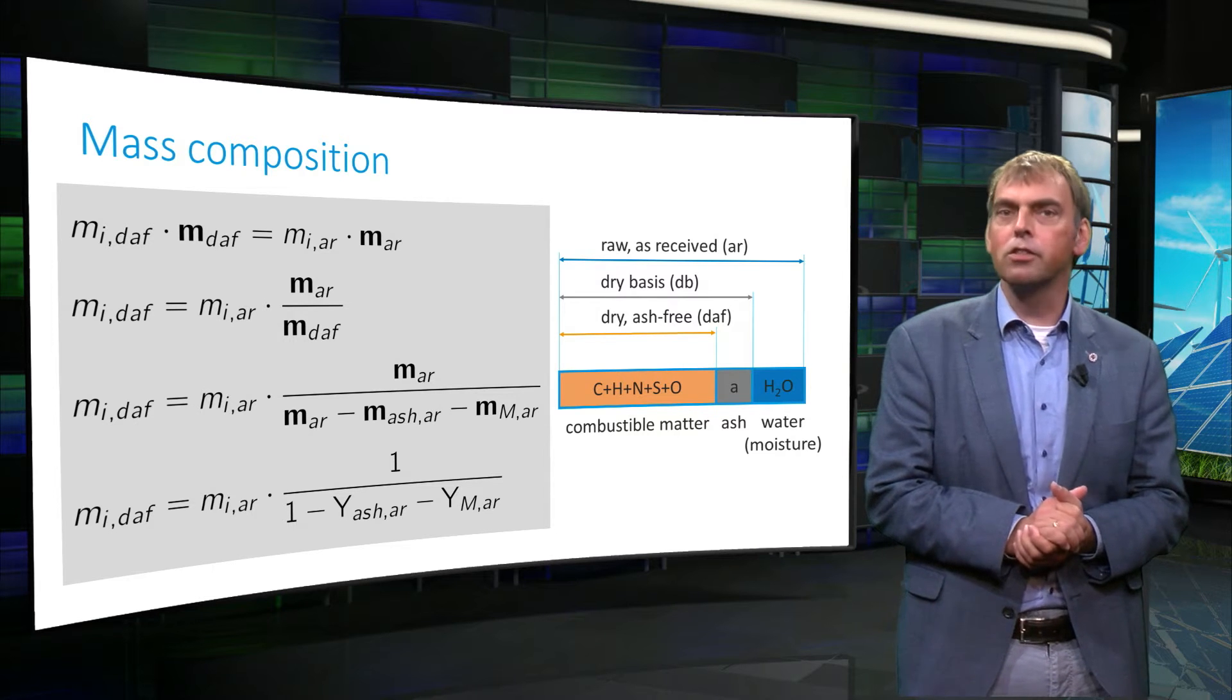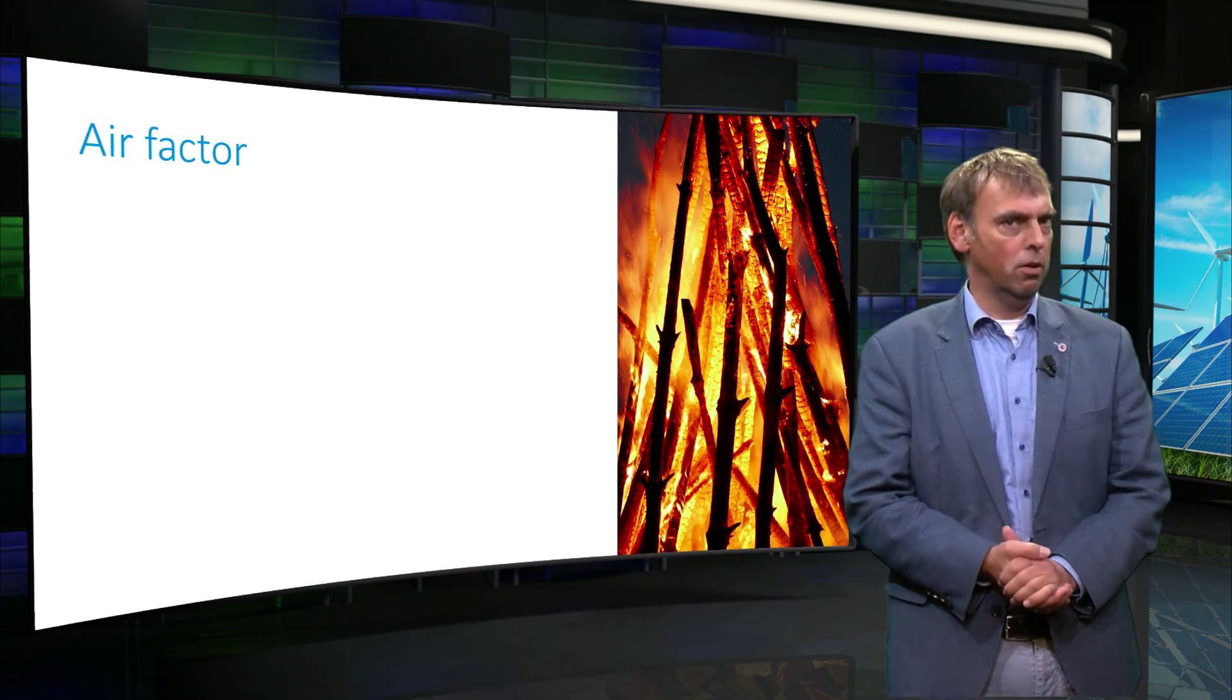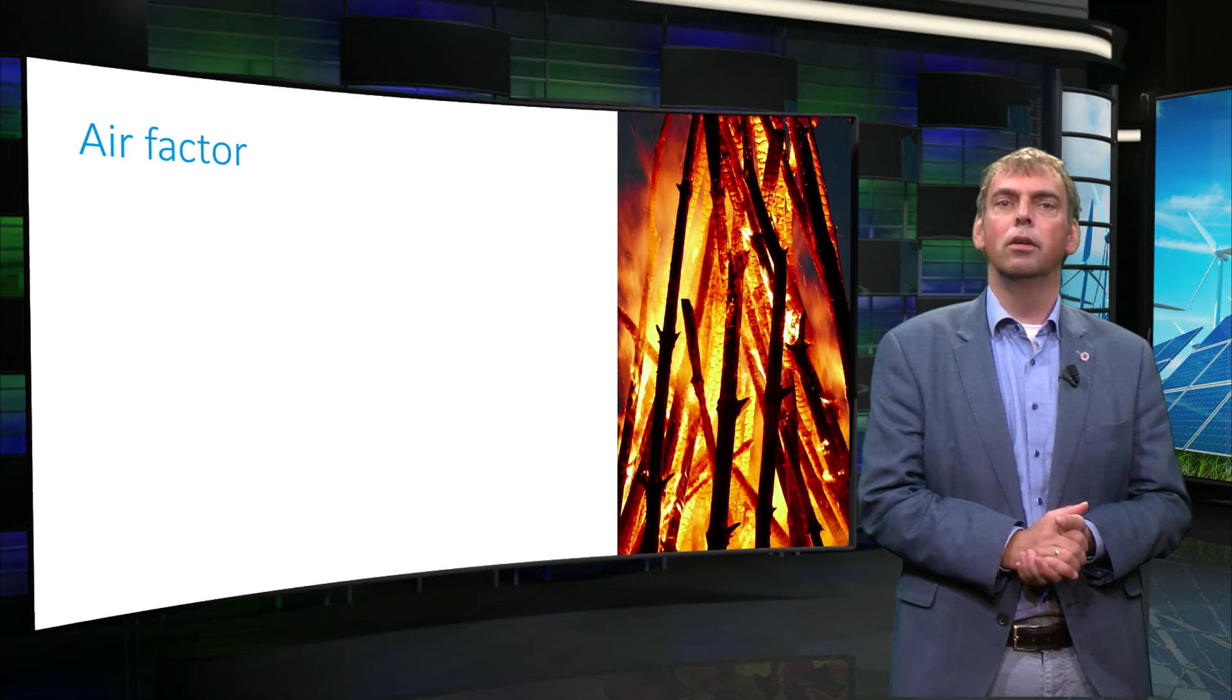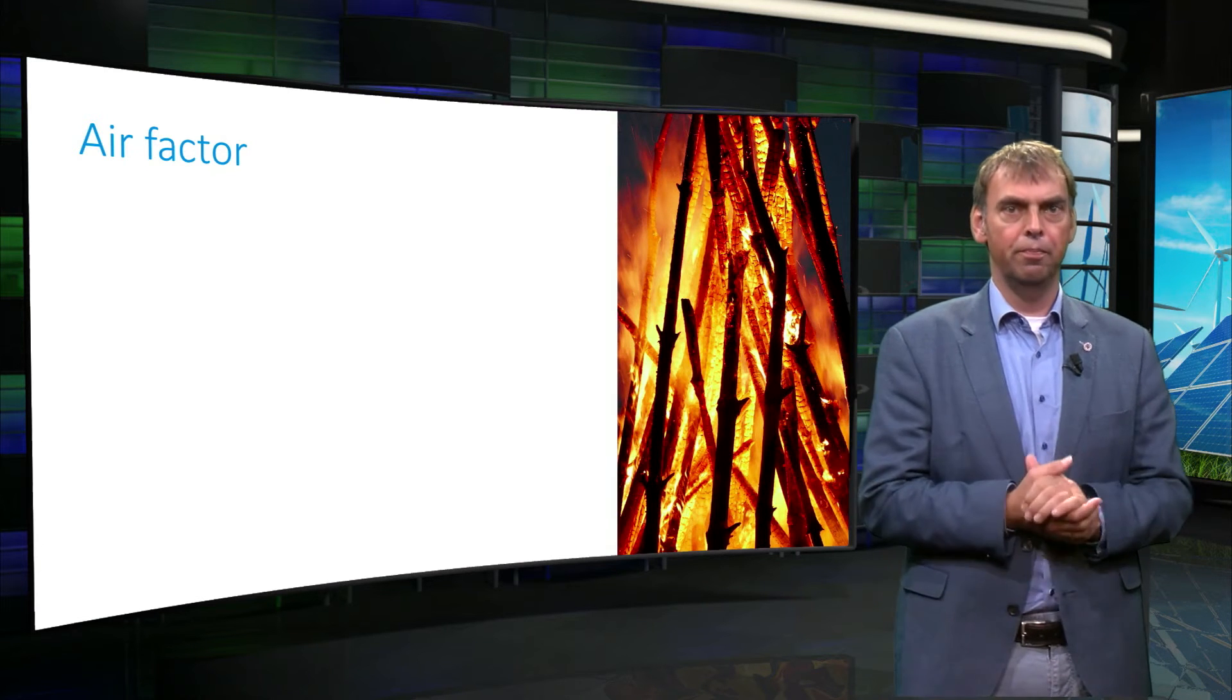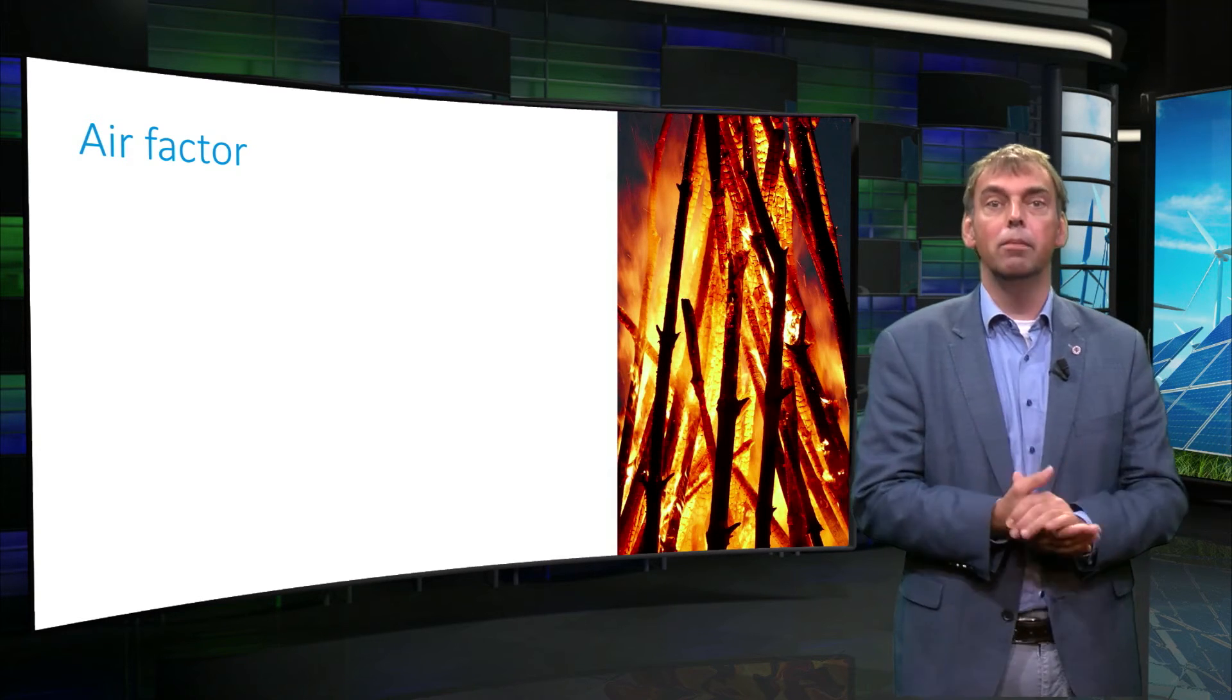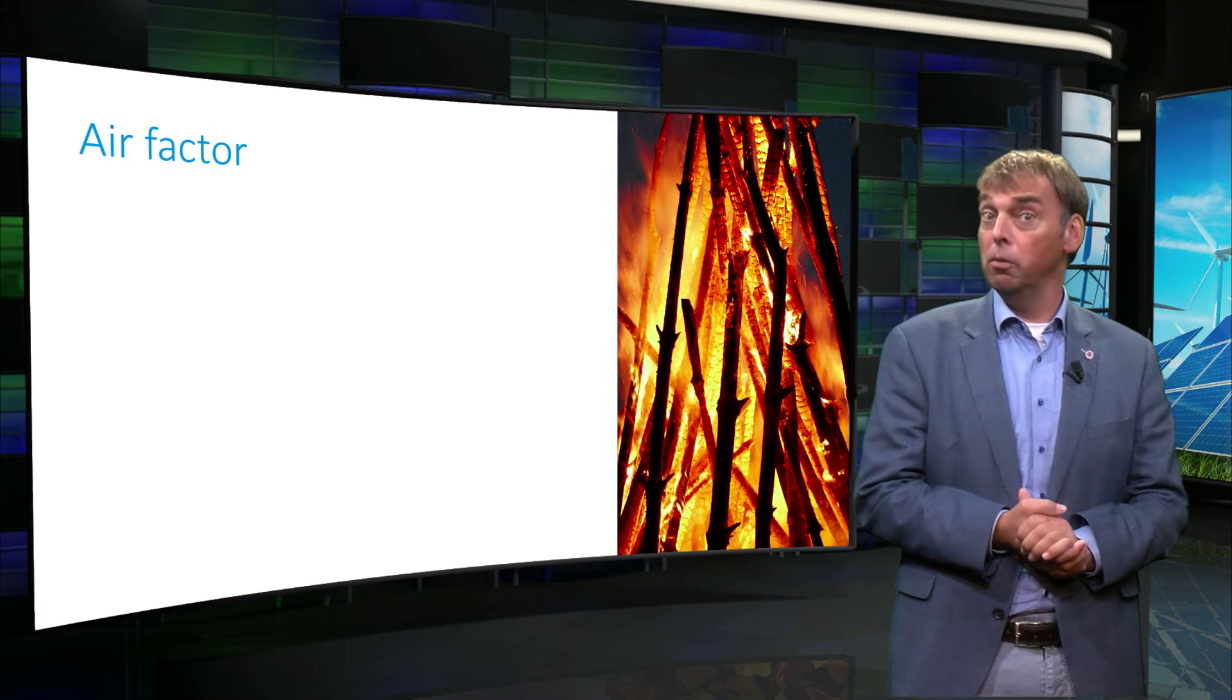This forms the basics of performing combustion calculations. One important question to answer in combustion calculations is how much air is needed for complete combustion of biomass fuel? The fully oxidized product of carbon is carbon dioxide and that of hydrogen is water. If there is exactly enough oxygen to oxidize all combustible elements, we speak of complete combustion conditions. This is called stoichiometric combustion.